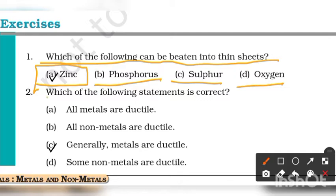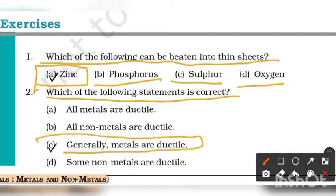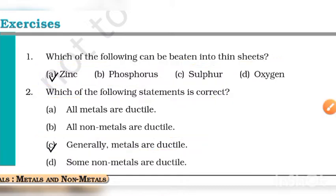Question 2: which of the following statements is correct? The options are: all metals are ductile, all non-metals are ductile, generally metals are ductile, and some non-metals are ductile. The correct answer will be C - generally metals are ductile. That is option C. Next question.